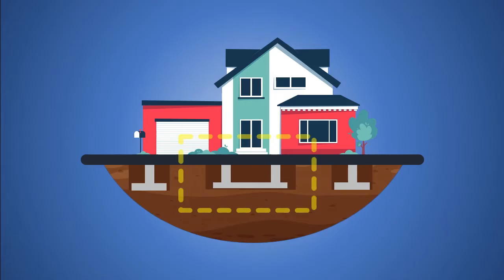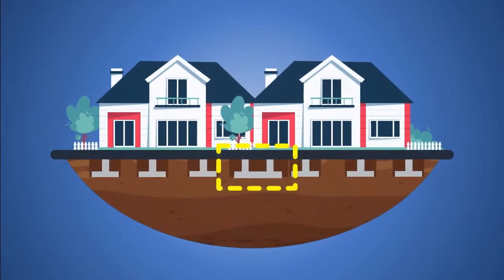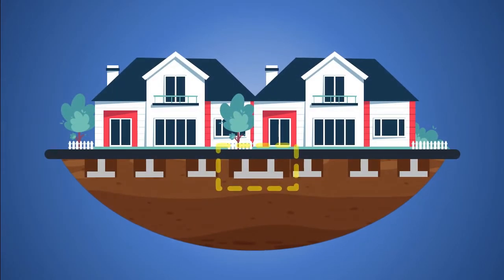These types of footings are adopted when the two columns are so close to each other that their individual footings would overlap, or when the property line is so close that spread footing would be subjected to eccentric load.